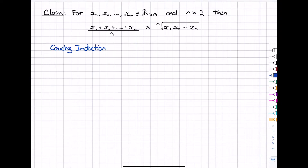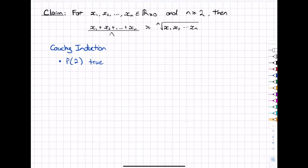Cauchy induction starts off like regular induction in that we need to prove a base case. In our claim here we're claiming that this is true for n greater than or equal to 2. It's actually true for n greater than or equal to 1, but the n equals 1 case is a bit boring, so we're doing it for n greater than or equal to 2, and so we have to have our base case as with standard induction.